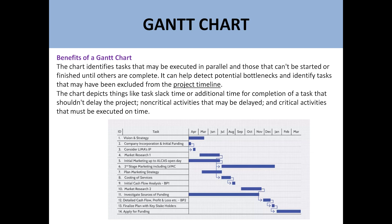It can help detect potential bottlenecks and delays that may have been excluded from the project timelines. The chart depicts things like task slack time. Slack time means an activity which can be delayed but the overall project will not be delayed. Additionally, it shows non-critical activities that may be delayed and critical activities that must be executed on time.